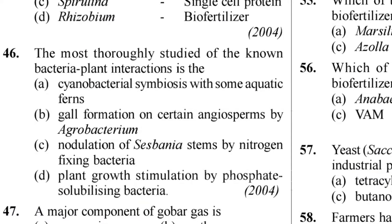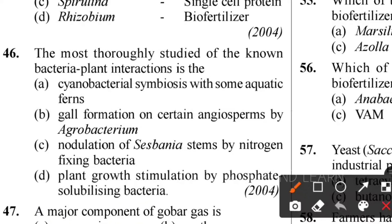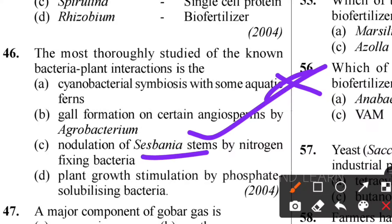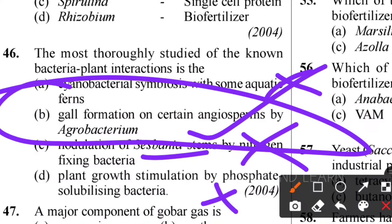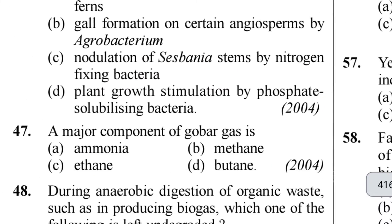Forty-sixth question: the most probably studied known bacteria-plant interaction. Cyanobacterial symbiosis with aquatic ferns - not correct. Gall formation in certain angiosperms by Agrobacterium - correct. Nodulation of Sesbania stems by nitrogen-fixing bacteria - not correct. Plant growth stimulation by free-living rhizosphere bacteria - also not correct. Option B - gall formation by Agrobacterium - is the correct answer.